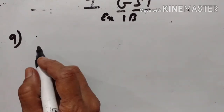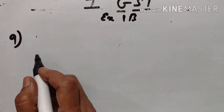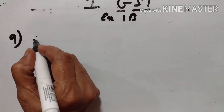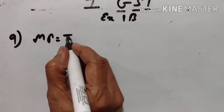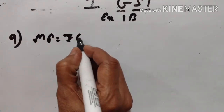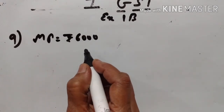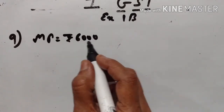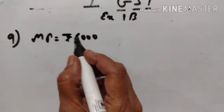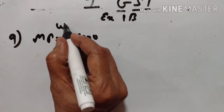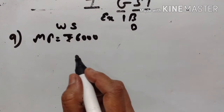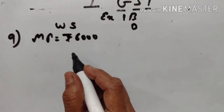Exercise 1b, 9th problem. The Marked Price of an article is Rs.6000. A wholesale seller sells it to a dealer at a discount of 20%.